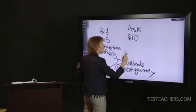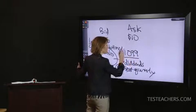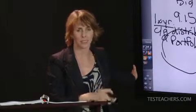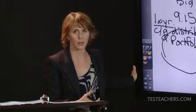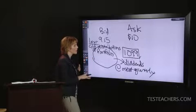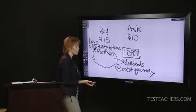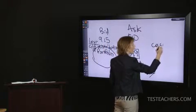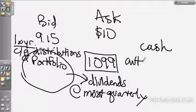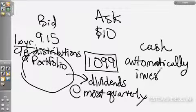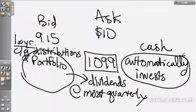These distributions will show up on the mutual fund shareholder's 1099 — both dividends and capital gain distributions — because depending on the situation, they might be taxed in different ways based on current tax laws. As a mutual fund shareholder, you can do two things with income distributions: take them in cash, or elect to automatically reinvest. Most investors choose to automatically reinvest rather than take the check in cash.